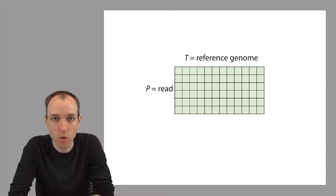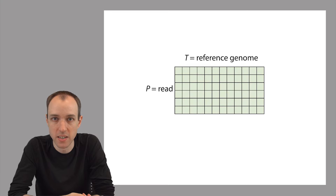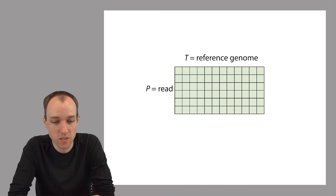What if we didn't have an index acting as a filter? If we just used dynamic programming alignment to solve the entire read alignment problem, we would fill in a dynamic programming matrix where the rows are labeled with characters from the read and the columns are labeled with characters from the genome. How big is this matrix? It's really, really big.